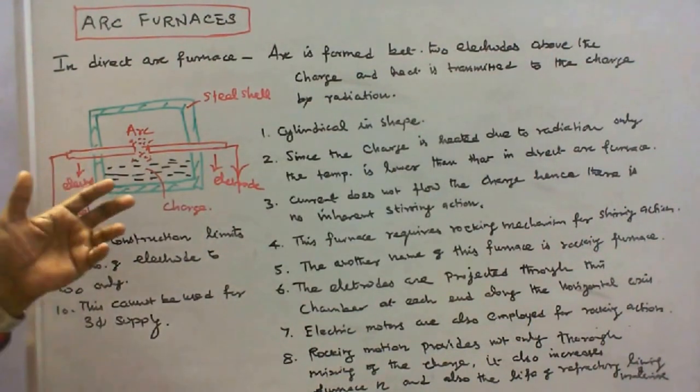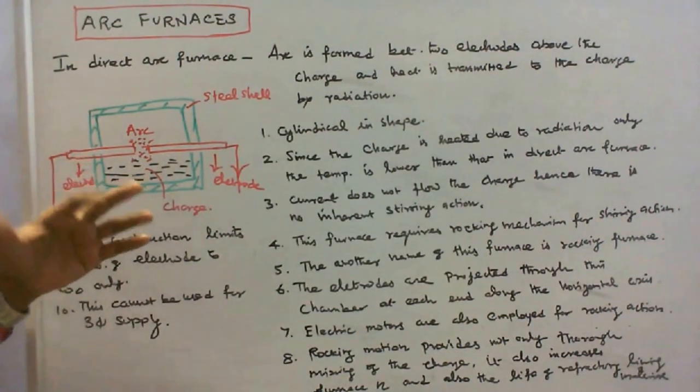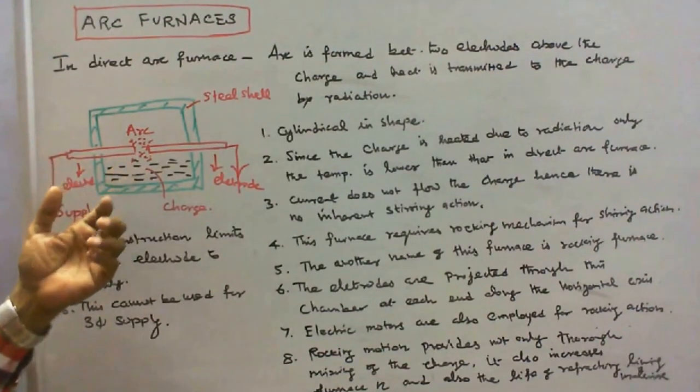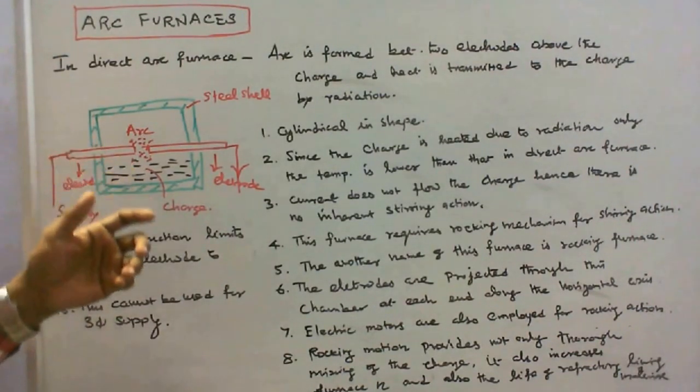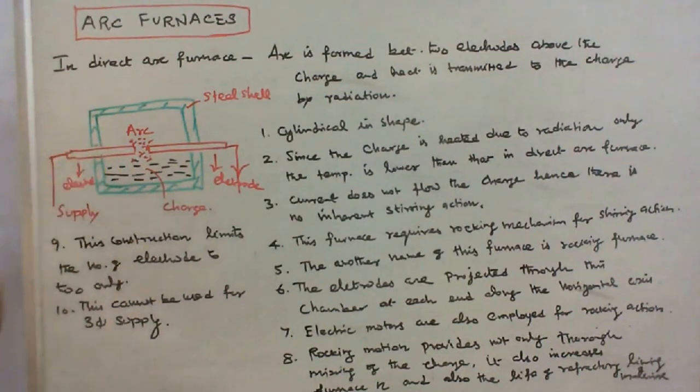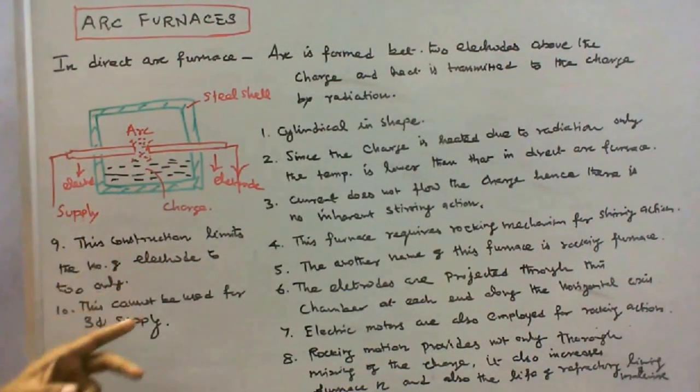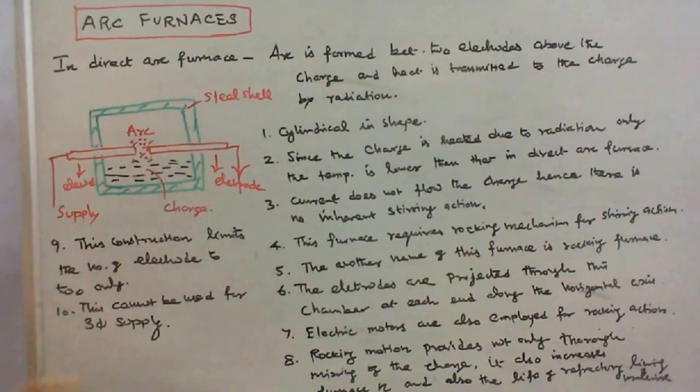Rocking motion provides not only thorough mixing of the charge, it also increases furnace efficiency and also the life of refractory lining material. This construction limits the number of electrodes to two only. Two electrodes only.